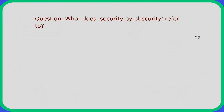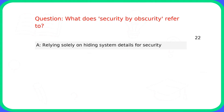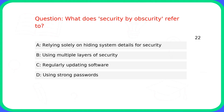Question: What does security by obscurity refer to? Answer: A. Relying solely on hiding system details for security.